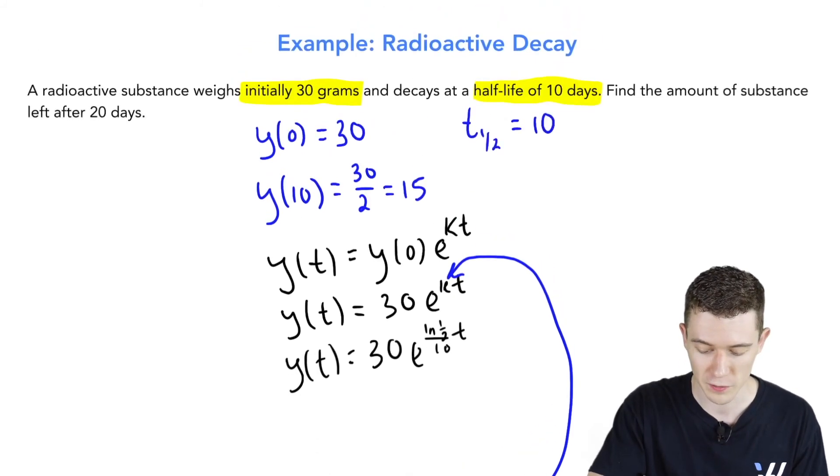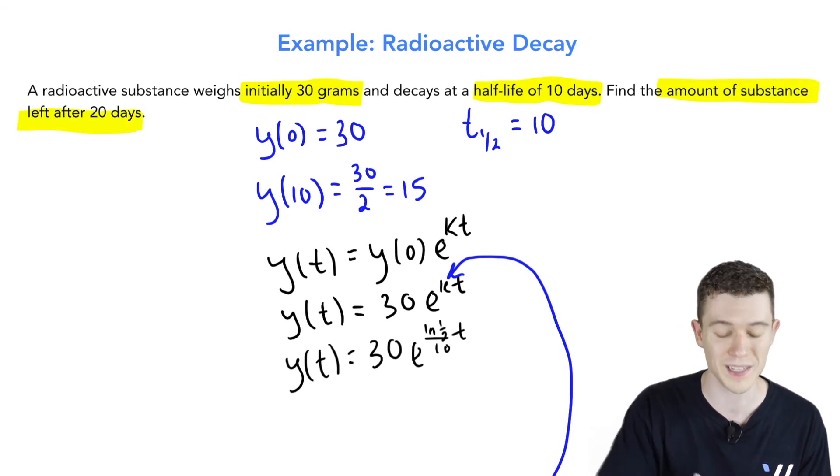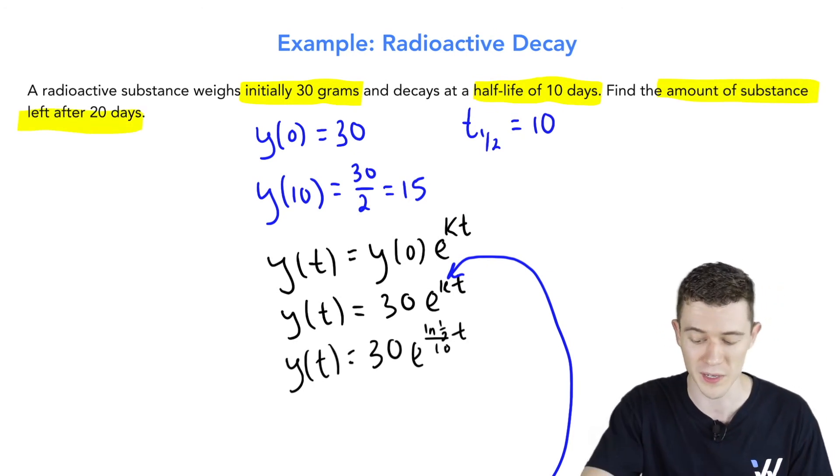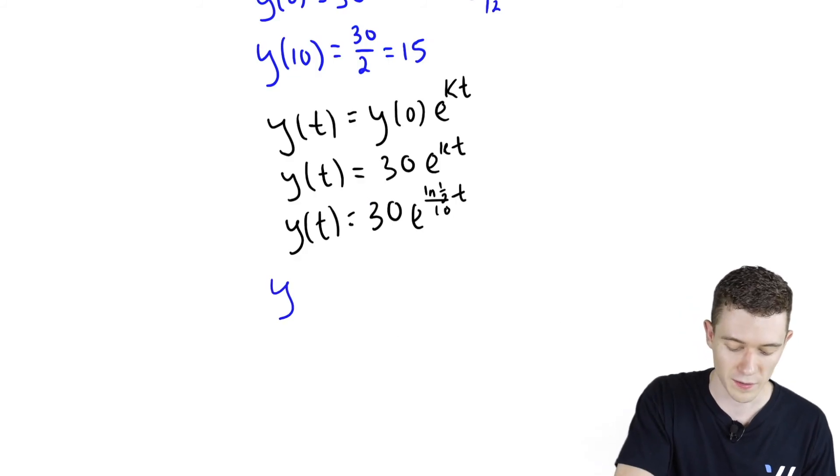What was our question? Find the amount of substance after 20 days. When t equals 20, let's substitute 20 into our new equation. y(20) = 30e^(ln(1/2)/10 * 20).